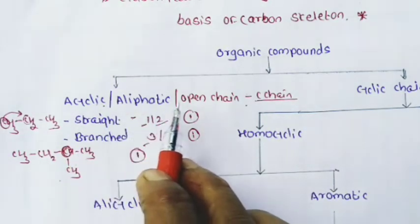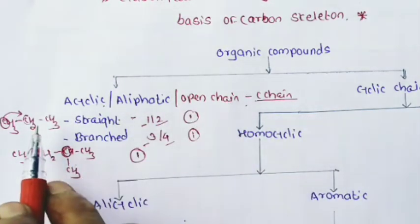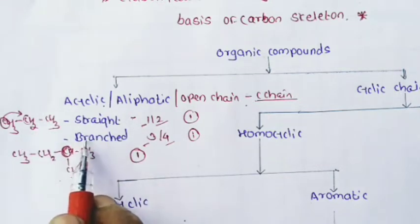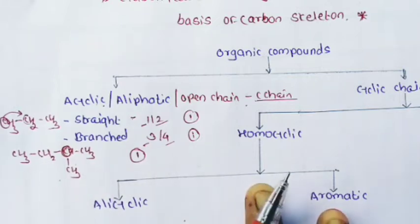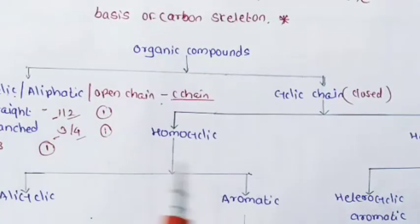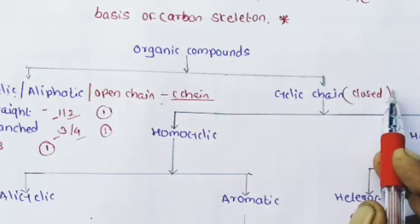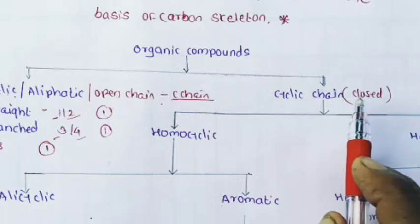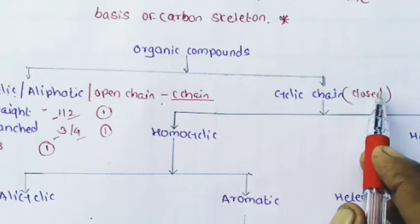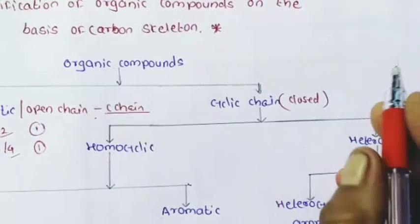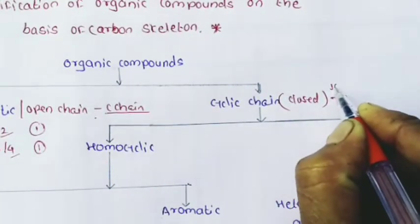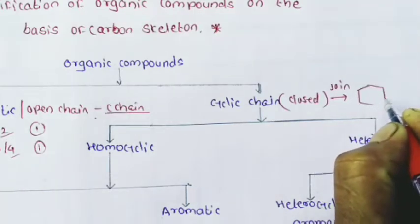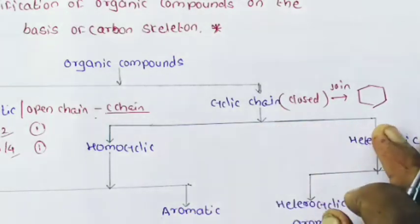This branched chain compound has a carbon atom bonded to either three or four carbon atoms. It is an acyclic, aliphatic, or open chain compound — the molecule has a chain of carbon atoms that may be straight chain or branched chain. In cyclic or closed chain compounds, molecules are formed by joining of atoms to form a ring-like structure.